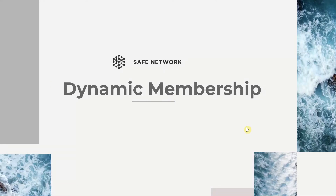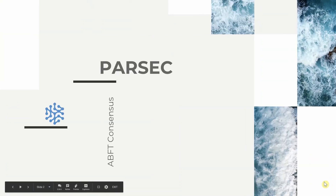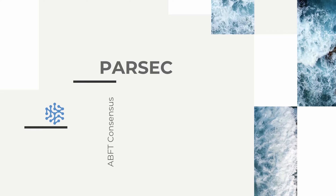Hi everybody. Today we're going to explore how a consensus algorithm works in an open network. I'll be using Parsec, an ABFT consensus algorithm, to show you how a network that lets nodes join and leave at will can still reach agreement about what's going on. I'll explain what this means in practice, run some code, and show what's happening. And hopefully it'll help you to then go off and use that code in any permissionless project that you're involved with. So let's kick off.